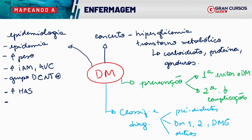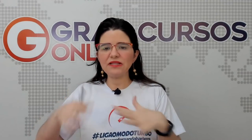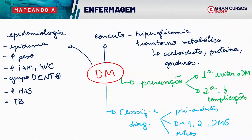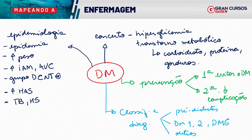Duas doenças transmissíveis têm associação com diabetes. A tuberculose: tanto o diabético tem maior chance de pegar tuberculose, como a pessoa com tuberculose tem maior chance de desenvolver diabetes. É uma relação bem intrínseca. E também a hanseníase — vai-se encontrar um percentual mais alto de pessoas com diabetes dentro do grupo dos pacientes com hanseníase.